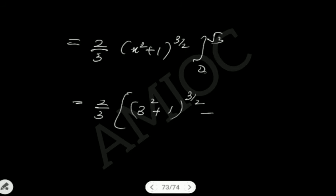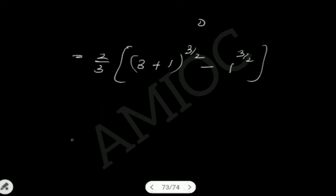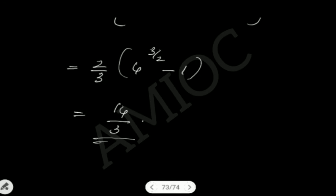That is 2/3 times 4 to the power 3/2, minus the lower limit at x equals 0, which gives 2/3 times (0 plus 1) to the power 3/2, equal to 2/3 times 1. Now 4 to the power 3/2 equals 8, so we get 2/3 times (8 minus 1), which equals 2/3 times 7, giving the final answer of 14/3.